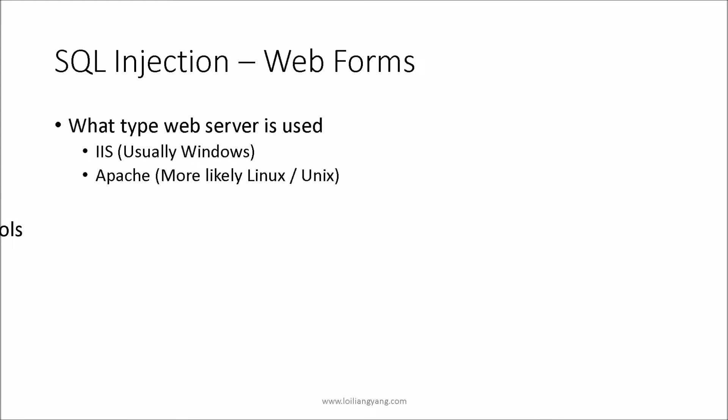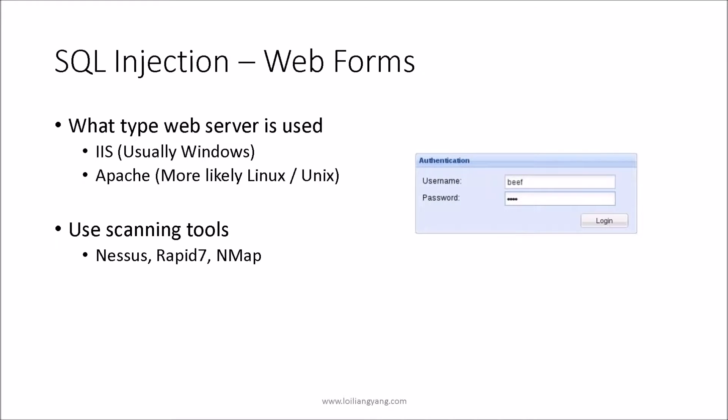Most SQL injections are inserted into web forms — web pages that take in one or multiple inputs that are then submitted to the web application server. If we don't know exactly what type of web server is running on a host, we can use scanning tools like Nessus, Rapid7, or even more basically NMAP to gather information about the system, after which we can find vulnerabilities pertaining to the web service so that we can exploit the web forms much quicker.